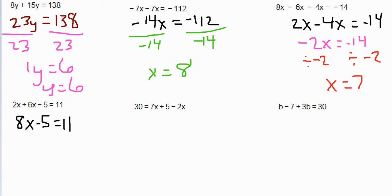Now it should look like a question you did a few days ago. We're going to get rid of the stuff that's on the same side of the letter by not touching it. That's negative 5. So we're going to add 5 to both sides. That would give us 8x equals 16.